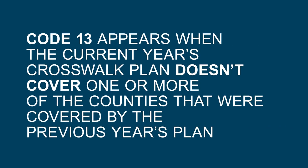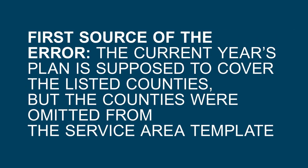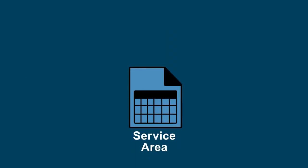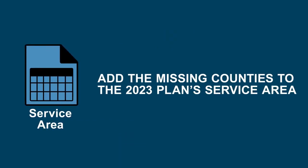This code appears when the current year's crosswalk plan doesn't cover one or more of the counties that were covered by the previous year's plan. The first potential source of the error is that the current year's plan is supposed to cover the listed counties but the counties were accidentally omitted from the Service Area template. If this is the case, open the current year's Service Area template and add the counties that were listed in the correction to the current year's plan's service area and save the template.